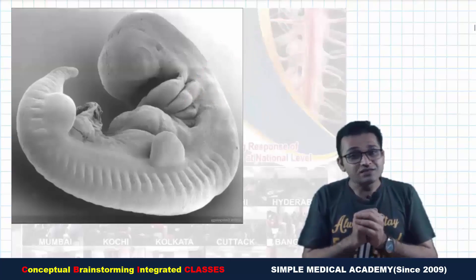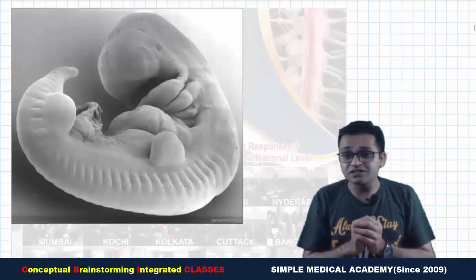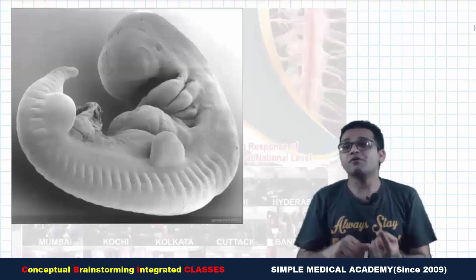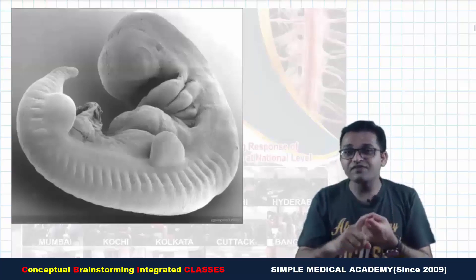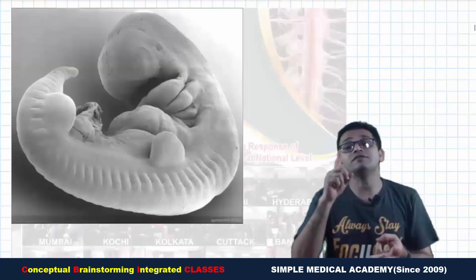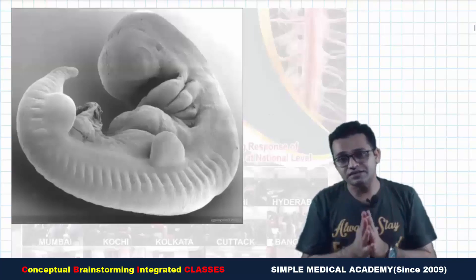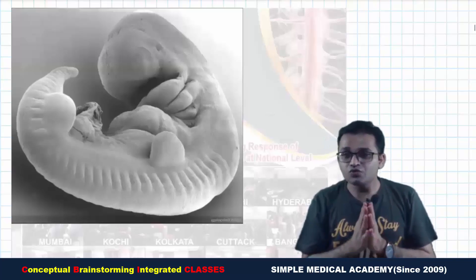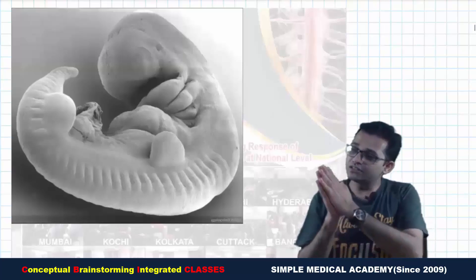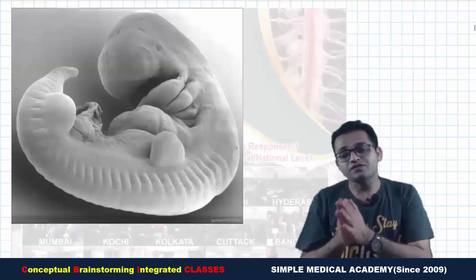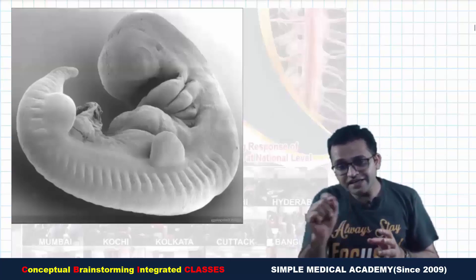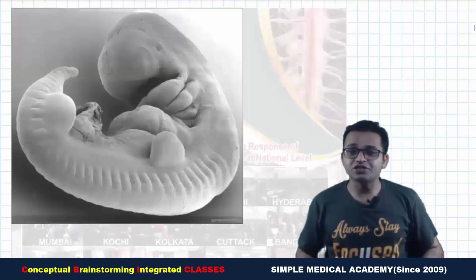But actually, the pharyngeal arch is not made up of one thing. It is made up of the pharyngeal cleft, pharyngeal arch, pharyngeal pouch, and the pharyngeal membrane, which together are known as the pharyngeal apparatus.